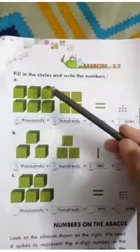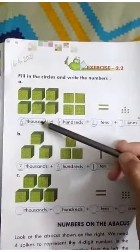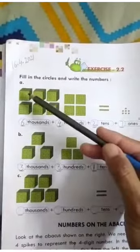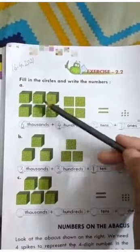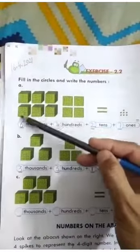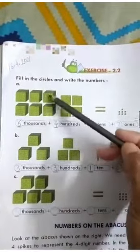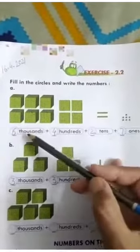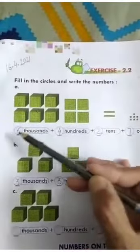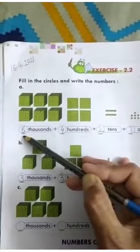As you can see here, there are 6 figures: 1, 2, 3, 4, 5, 6. So with 1000s you will write 6.